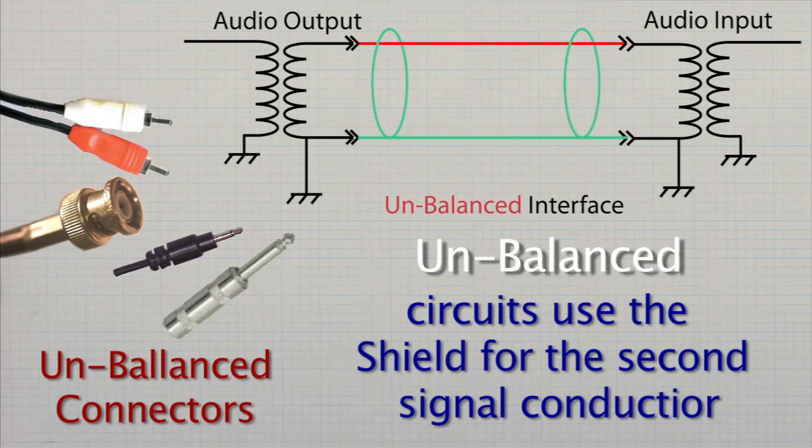Unbalanced interconnections between equipment lead to the problems associated with ground loops. When the shield of a cable is used to equalize the voltage between two grounds, a hum will be introduced into the signal being carried.